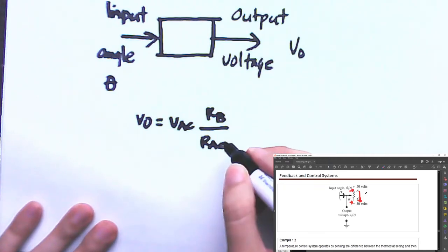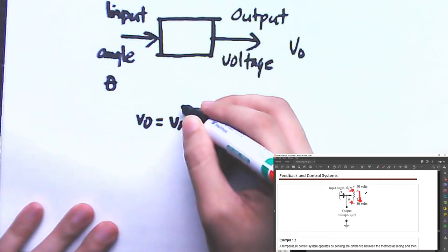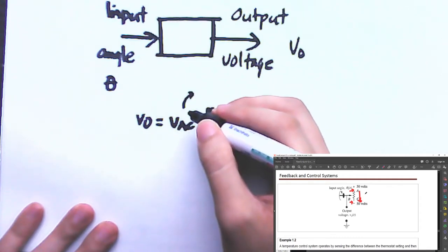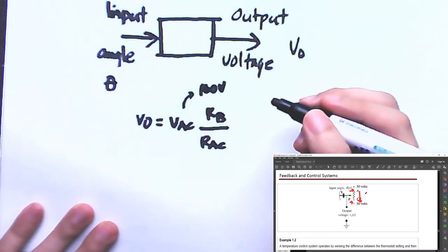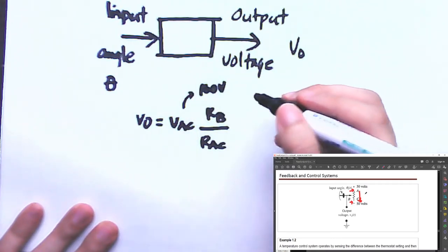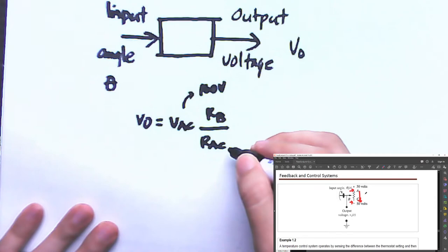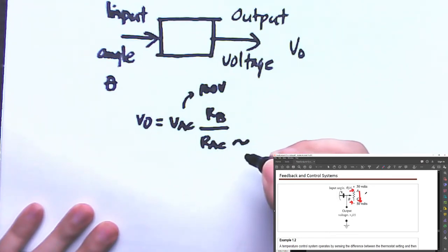Obviously, V_AC here has a potential of +50 volts and -50 volts, so all in all, 100 volts. The resistance R_AC — since we don't have given resistance values — can be reduced and is actually proportional to the entire length.